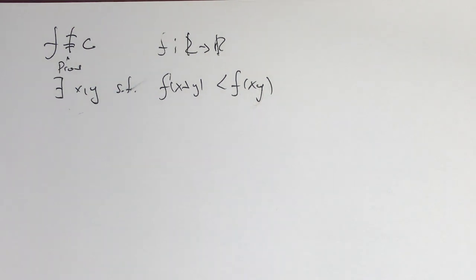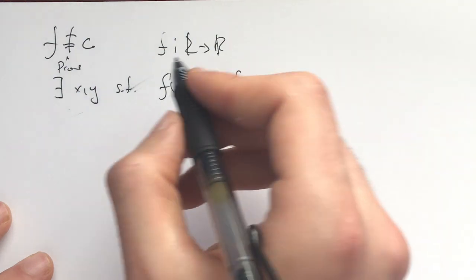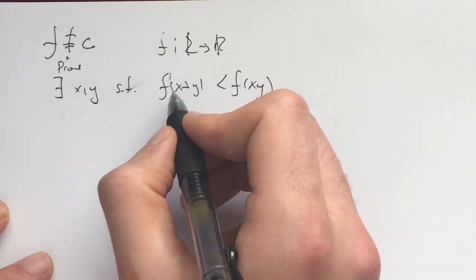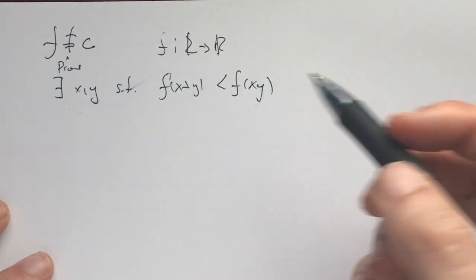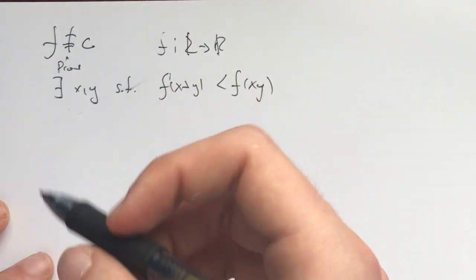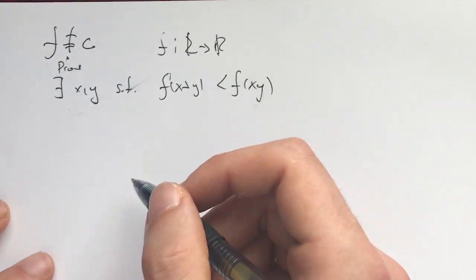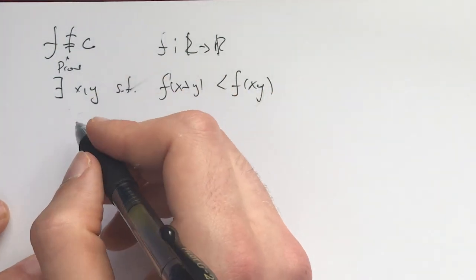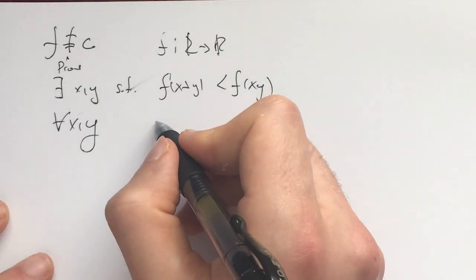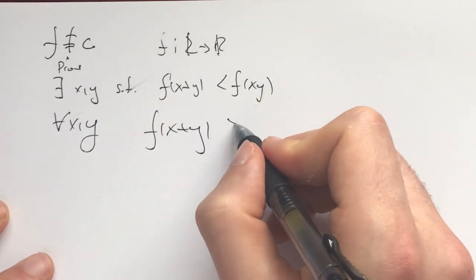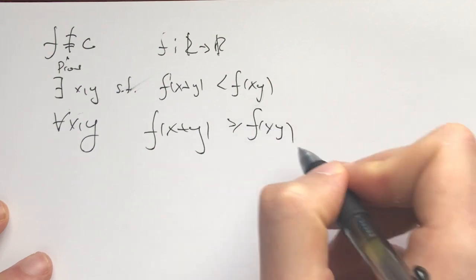And this is the answer which really blew my mind the first time I saw it on a problem: to prove there exists x and y such that f(x+y) < f(xy), what is the contrapositive? What is assuming the contrary? Well, assuming the contrary is that for each x and y, we have f(x+y) ≥ f(xy),